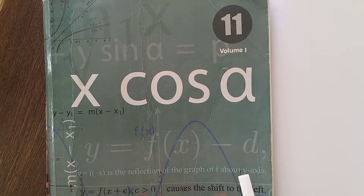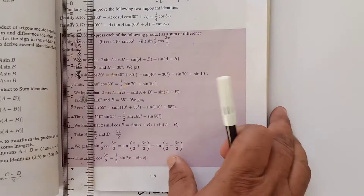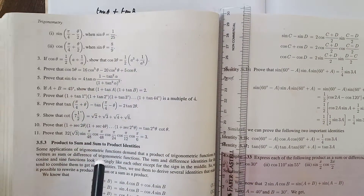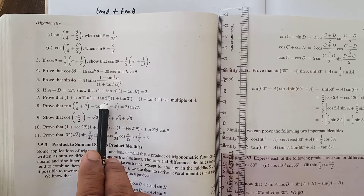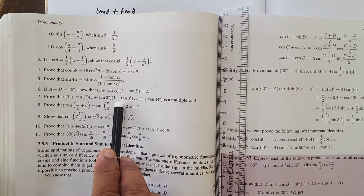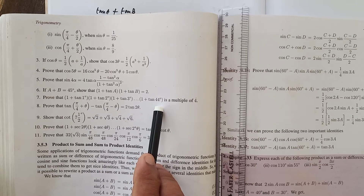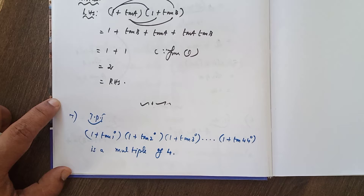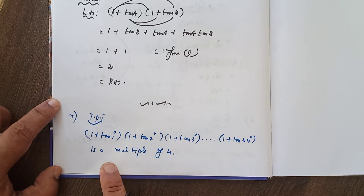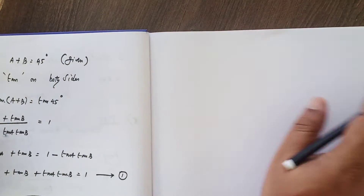Hi students, this is Subhokumar. 11th standard mathematics, chapter number 3, continuation of exercise 3.5. Problem number 7: prove that (1+tan1°)(1+tan2°)(1+tan3°) going up to (1+tan44°) is a multiple of 4. We have to prove this expression is a multiple of 4.